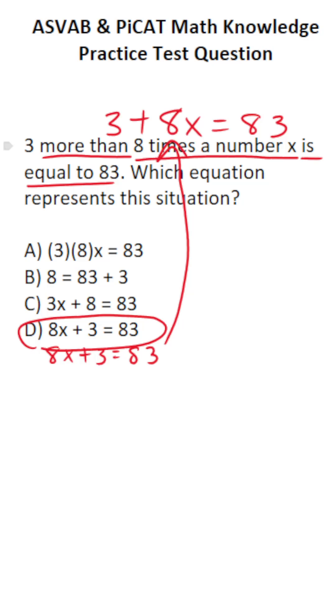Again, you had to identify those key words: 8 times the number x means multiplied by x, and 3 more than means to add. All right, so that is that one.